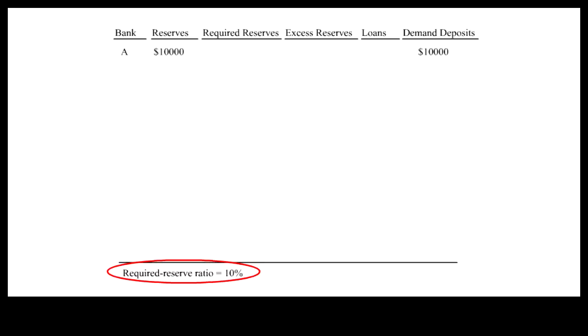Let's follow the step-by-step process of money creation in the banking sector. Suppose $10,000 of reserves have been created and deposited into Bank A. These deposits are matched by an equal amount of reserves. But in a fractional reserve system, we don't need $10,000 reserves to back up $10,000 of demand deposits. Suppose the required reserves are only 10% of the demand deposits — that's only $1,000. The rest, $9,000, could be loaned out to earn interest.